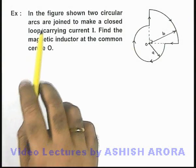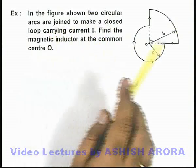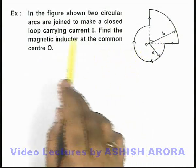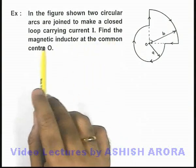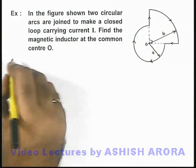This example says that in the figure shown, two circular arcs are joined to make a closed loop carrying a current i. We are required to find the magnetic induction at the common center O.